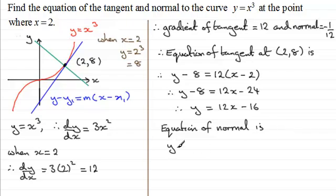So the equation of normal is, and we've got y minus y1 again, y1 is 8, equals the gradient. Now the gradient, remember, for the normal is minus 1/12. So we've got minus 1/12, multiplied by x minus x1. x1 is 2, okay?